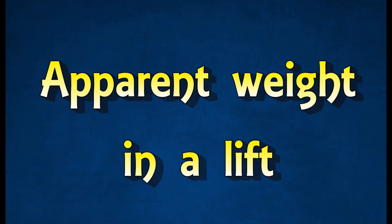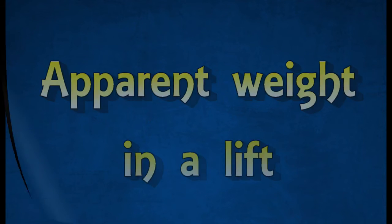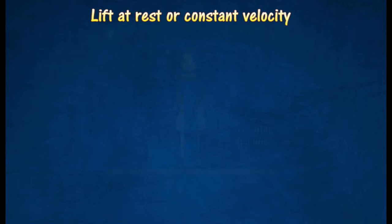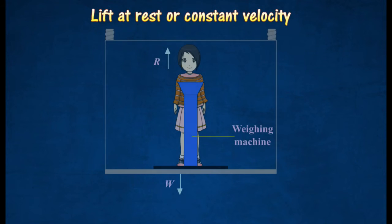Apparent Weight in a Lift. When a person stands on a weighing machine, the reading on the weighing machine is actually the reaction force that the weighing machine exerts back towards the person to support the person's weight.